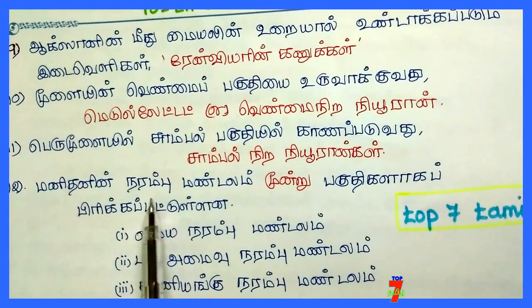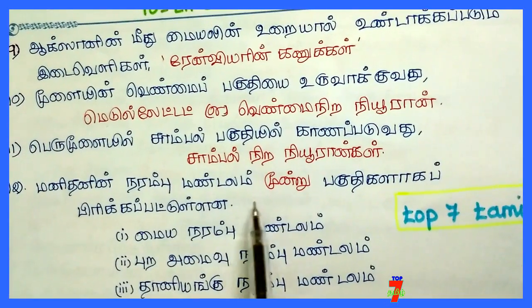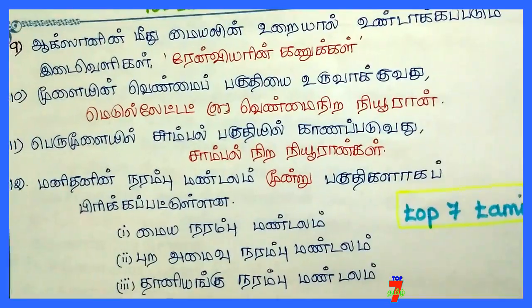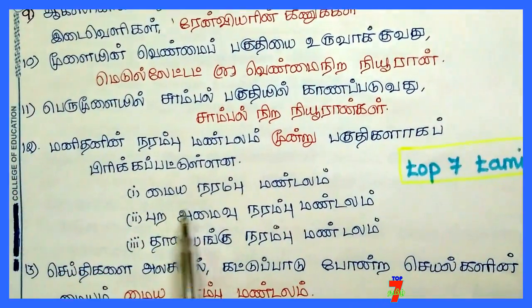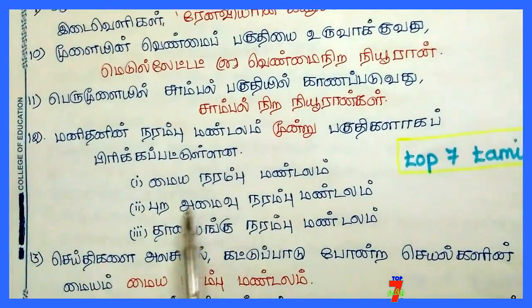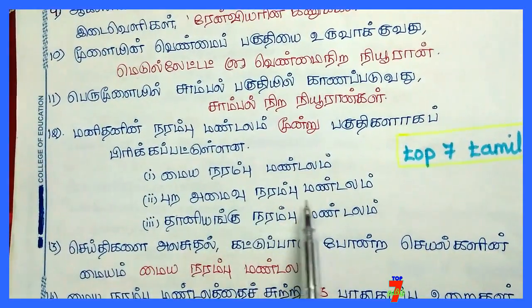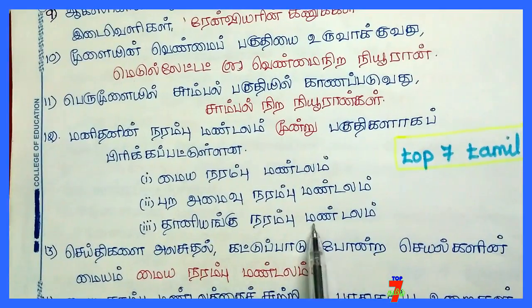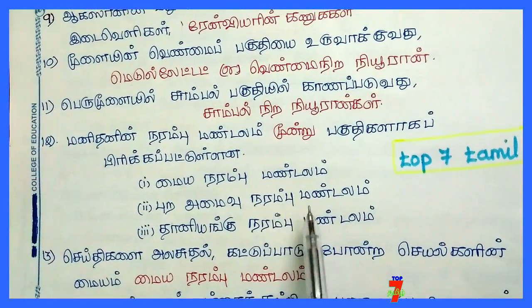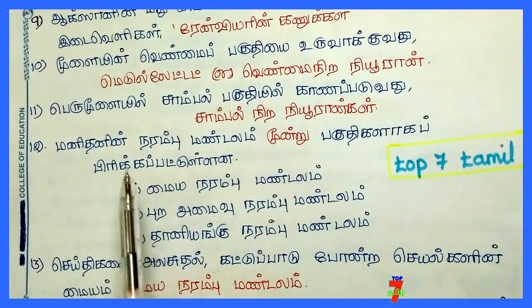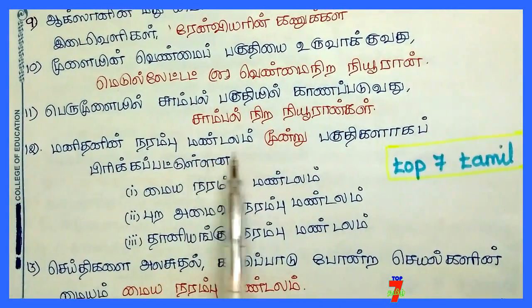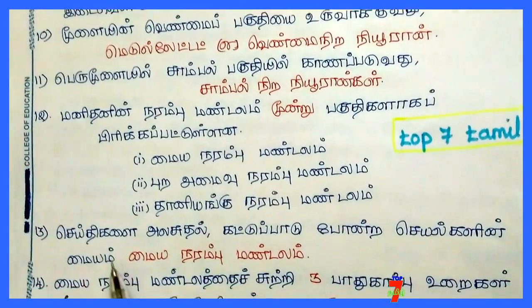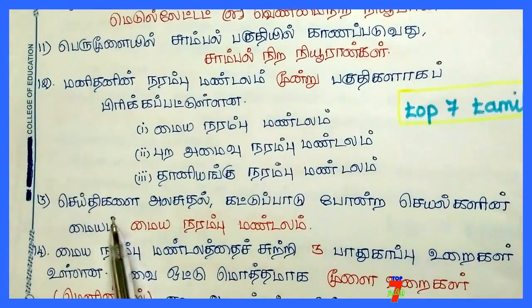The human nervous system is divided into three parts: the central nervous system (mayya naramu mandalam), the peripheral nervous system (pura amaiwu naramu mandalam), and the autonomic nervous system (taniyengu naramu mandalam). So three types of nervous system, and divided into three parts.